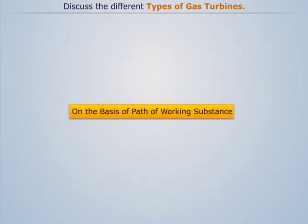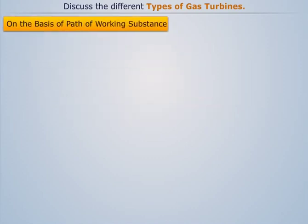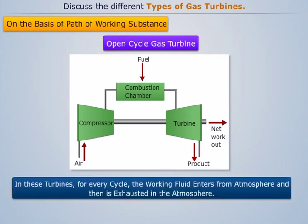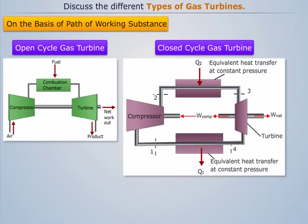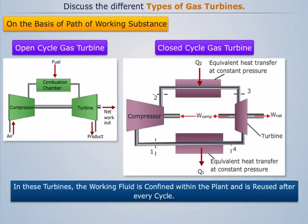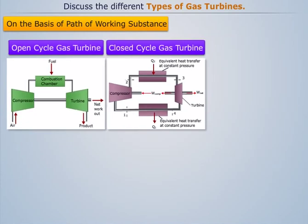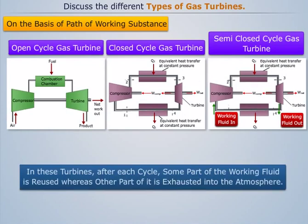On the basis of path of working substance, gas turbines can be divided into three types. Open cycle gas turbine: in these turbines, for every cycle the working fluid enters from the atmosphere and is then exhausted into the atmosphere. Closed cycle gas turbine: in these turbines the working fluid is confined within the plant and is reused after every cycle. Semi-closed cycle gas turbine: in these turbines, after each cycle some part of the working fluid is reused whereas the other part is exhausted into the atmosphere.